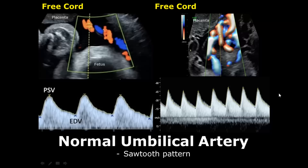We can perform Doppler study at three locations by placing the sample volume at specific points. The first is the placental end of the umbilical cord. The second is the free cord that is floating freely in the amniotic fluid. The third is the fetal end where the umbilical cord enters the fetus. However, the placental and fetal ends are difficult to analyze, which is why the free cord is sufficient for Doppler study.